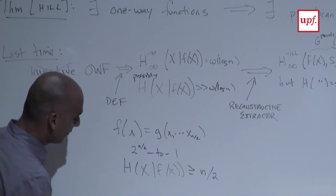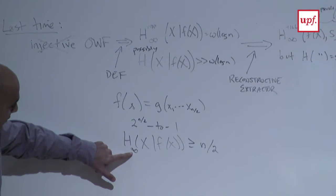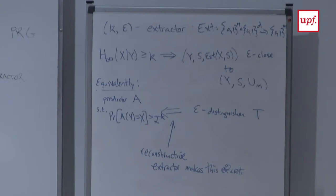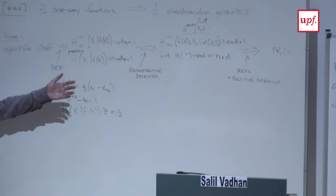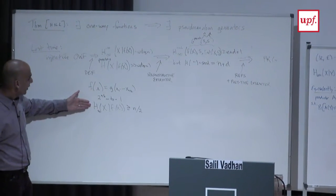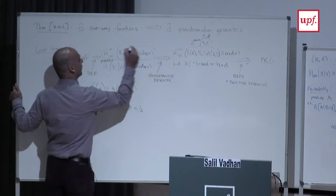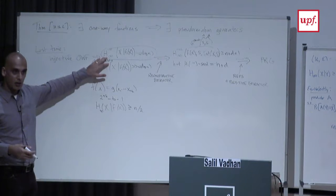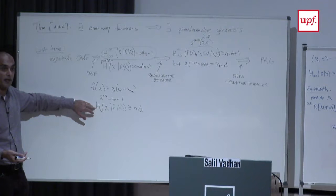In particular, the unpredictability entropy of x given f(x) is at least n/2 — you can't predict x from f(x) with better than 2^{-n/2} probability, but that's true even for unbounded algorithms. So the fact that x has unpredictability entropy is completely useless — it does not capture anything about the computational hardness of inverting f, because we have an even stronger statement that holds information-theoretically for this function.